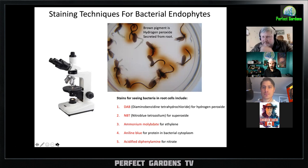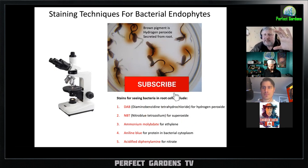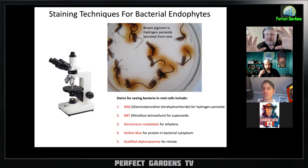We developed stains to view these bacteria — stains like DAB, NBT, ammonium molybdate, and aniline blue. Basically, these stains stain substances that are produced by the bacteria or produced by the plant in response to the bacteria, so we can see them inside. You need a microscope.